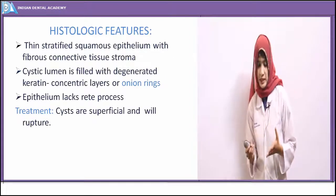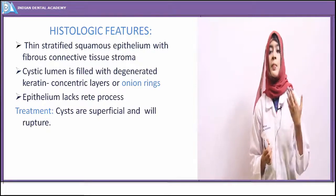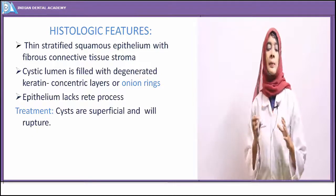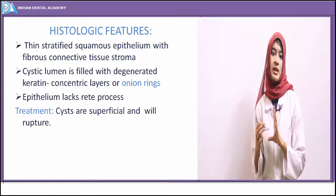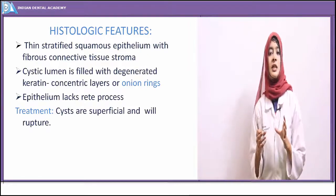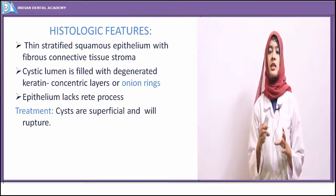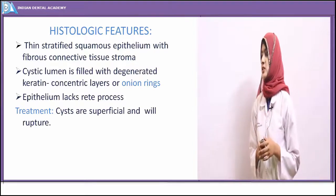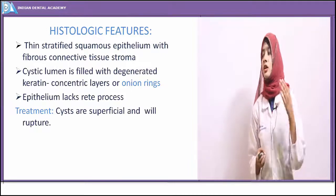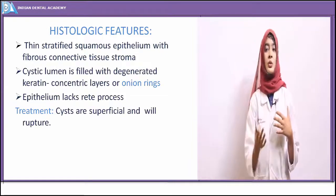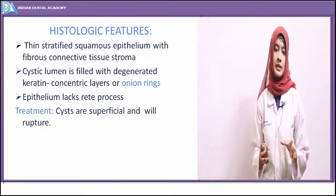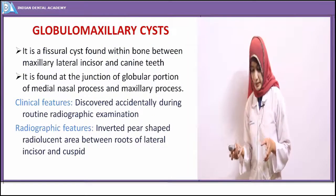Microscopically, palatal cysts present with an epithelial lining lacking rete ridges; the keratin in the lumen is arranged in concentric layers referred to as an 'onion ring' pattern. The connective tissue is fibrous. No treatment is required, as these cysts are so superficial they rupture by themselves.